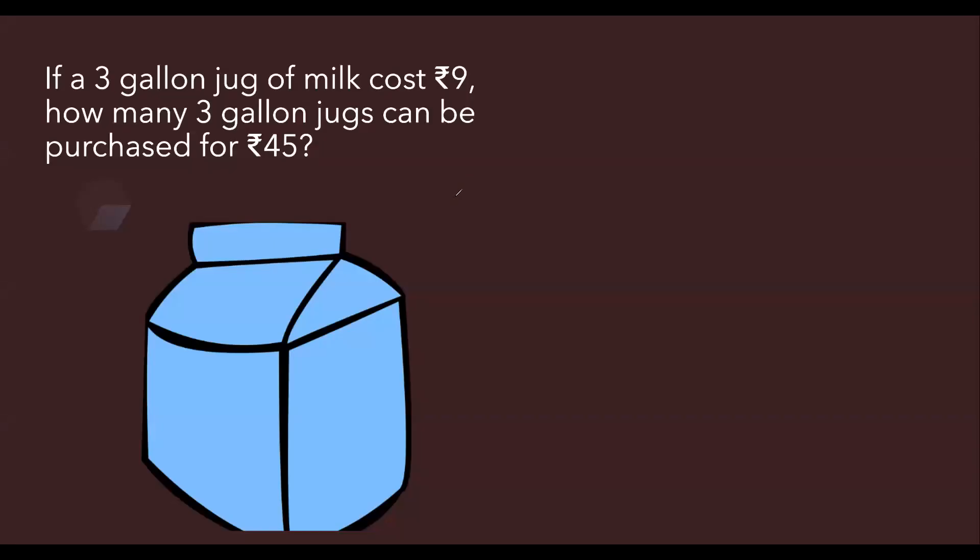This question is saying if a 3 gallon jug of juice cost rupees 9, how many 3 gallon jugs can be purchased for rupees 45? Rupees 45 means how many can we get? Simply we will form the ratio.